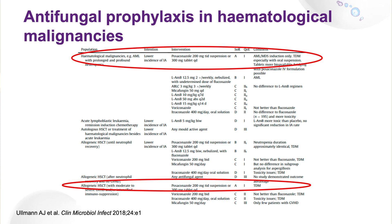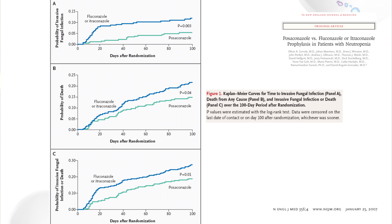According to EORTC-ECMM guidelines, A1 recommendations for prophylaxis exist only for hematological malignancy patients at high risk: AML/MDS patients, where posaconazole is recommended, and allogeneic stem cell transplant patients with graft-versus-host disease on high-dose steroids — also RCT-proven. This well-known Oliver Corneli paper published 16 years ago indicated that the risk of IFI was so much lower when posaconazole was used compared with fluconazole or itraconazole.